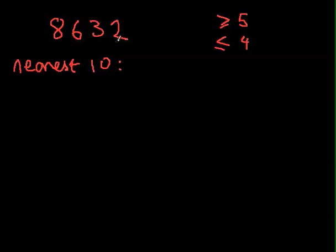So here, nearest 10, we use our 3 here. We know the number next to it is actually less than 5, so that means we can just write 8,630.